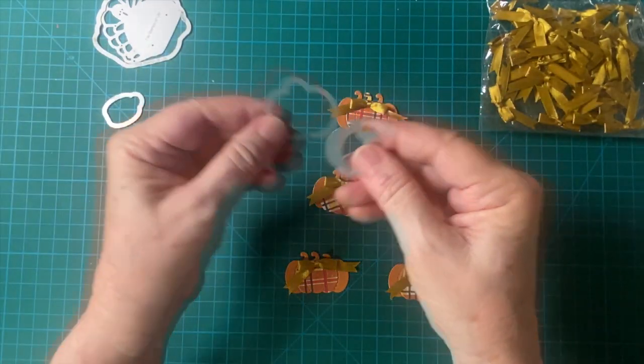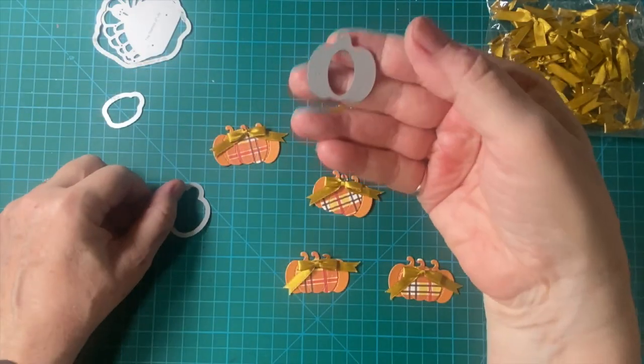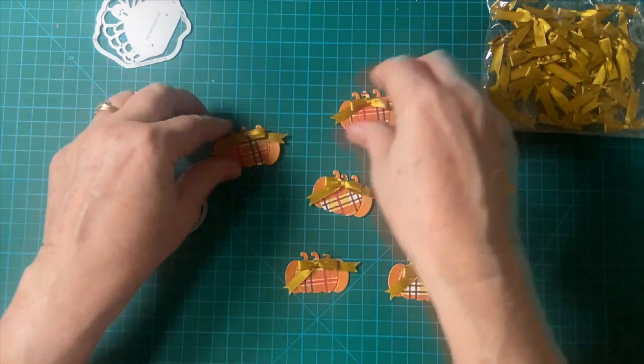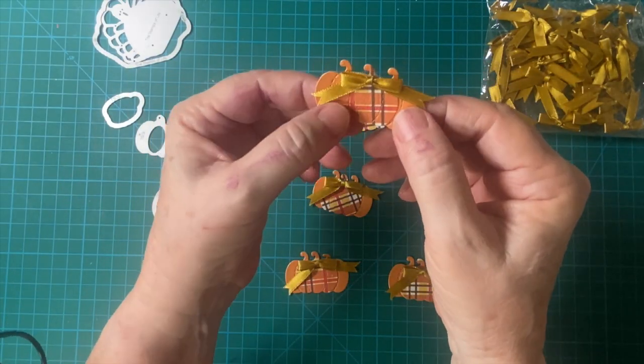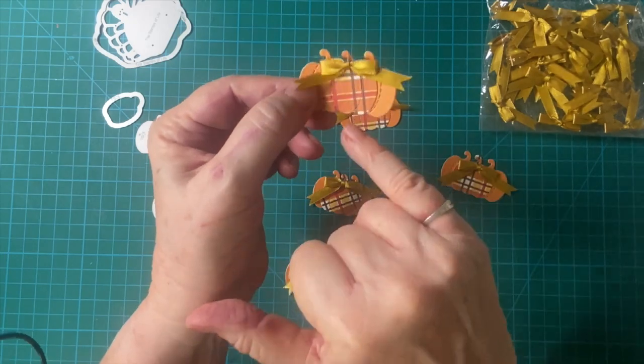But this is how. I did not use this. I just used the inside here. And I cut two from my shimmering cardstock, just plain orange. And then this piece here,